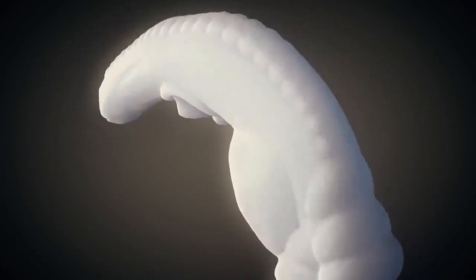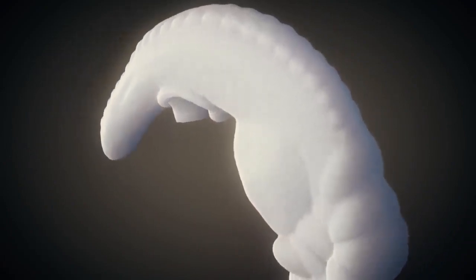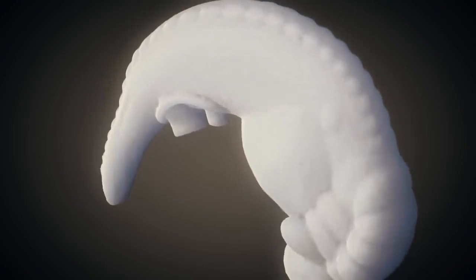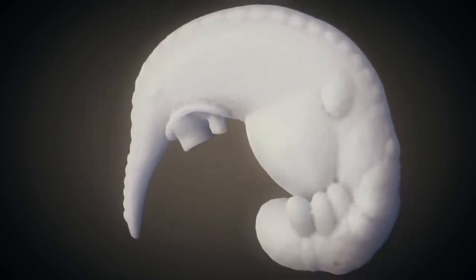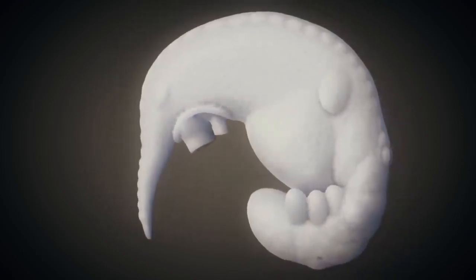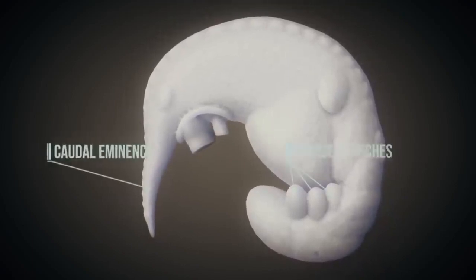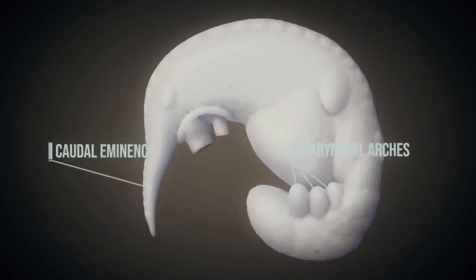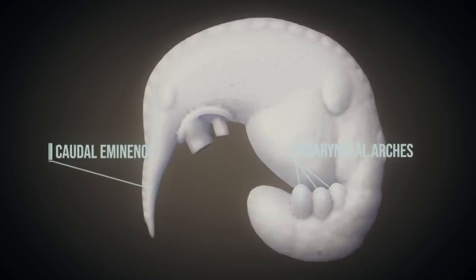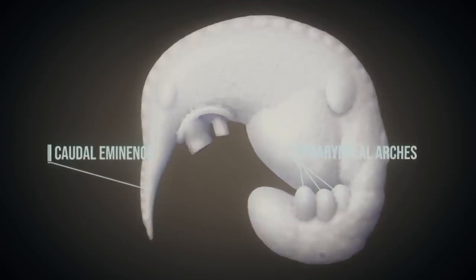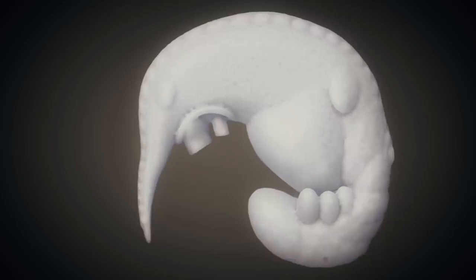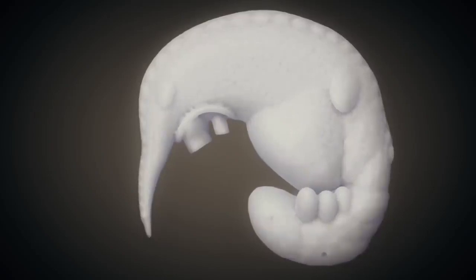During the fourth week, three pairs of pharyngeal arches appear. In addition, the upper limb buds are visible first, followed by the lower limb buds. The embryo is now curved in a C shape. The caudal eminence is tail-like in shape. The somites, which give rise to the cells forming the skeletal muscles and components of the skin, among other things, can still be identified.